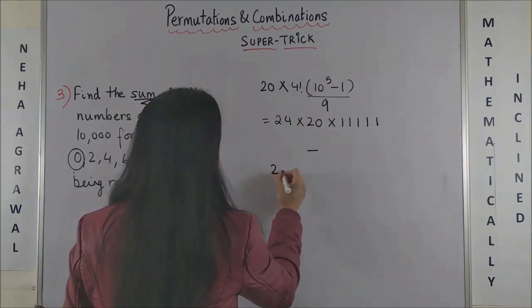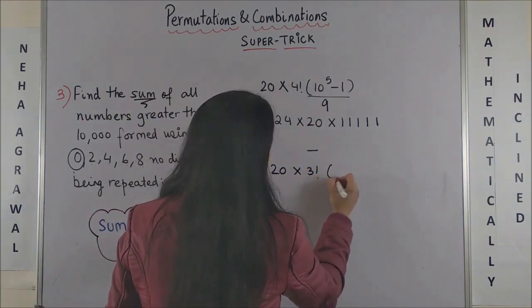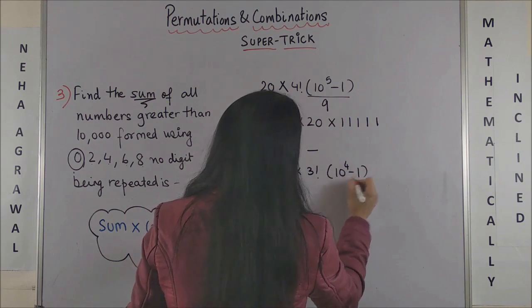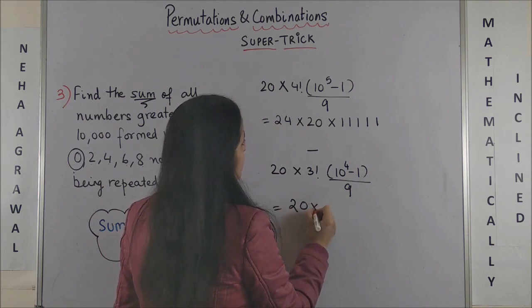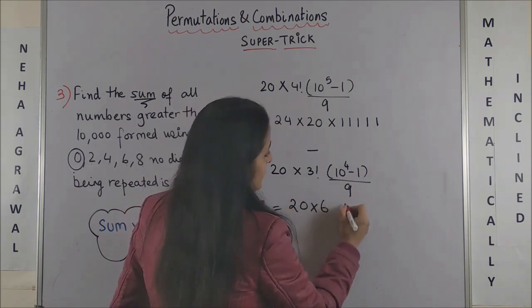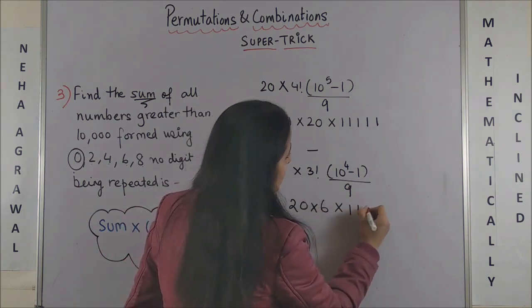So once again it will be 20 into 3 factorial into 10 raised to power 4 minus 1 upon 9. This time this gives you 20 into 6 and this would be into 1,111.